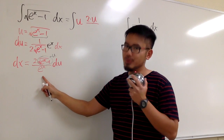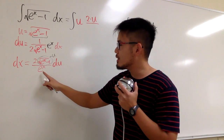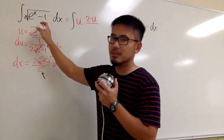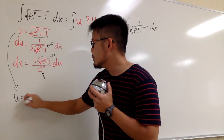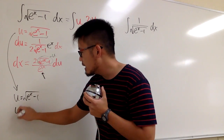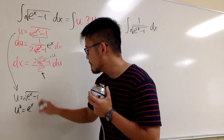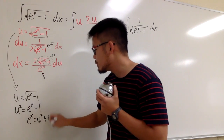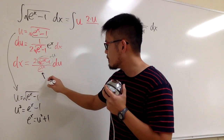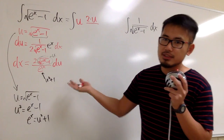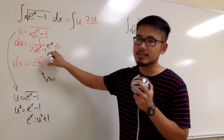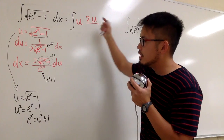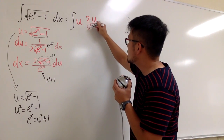What is e to the x in the u-world? The x is not invited in the u-world, so let's express it in terms of u. We know u equals the square root of e to the x minus 1. Square both sides: u squared equals e to the x minus 1. Add 1 to both sides: e to the x equals u squared plus 1. So for the denominator, we put down u squared plus 1. Now everybody is happy in the u-world.